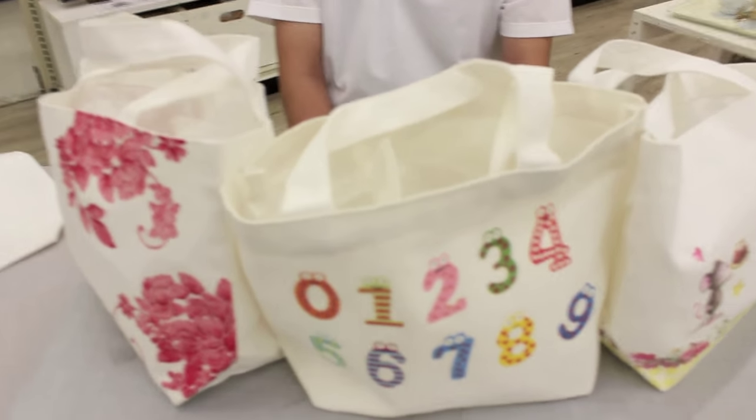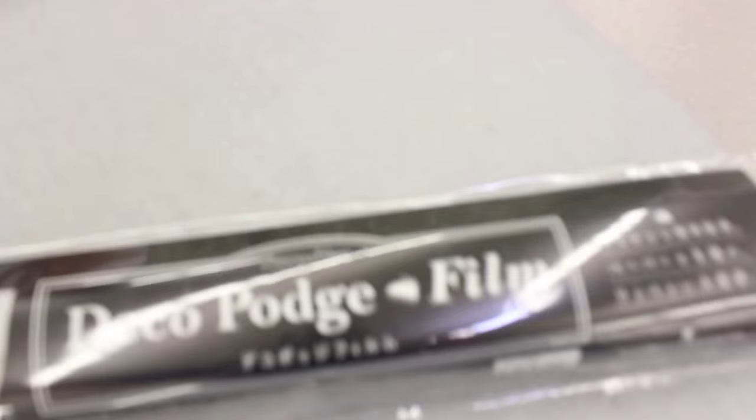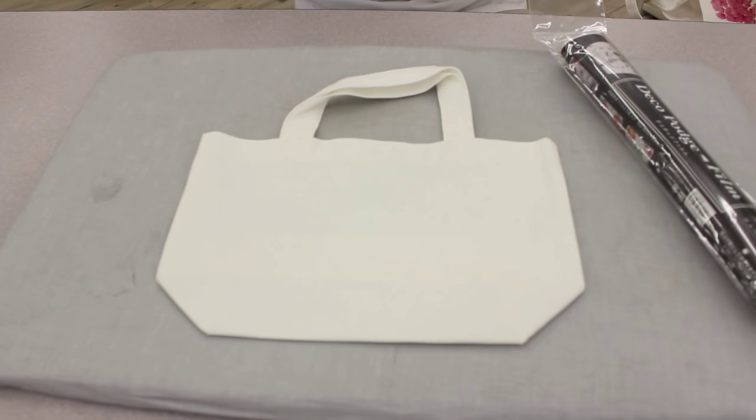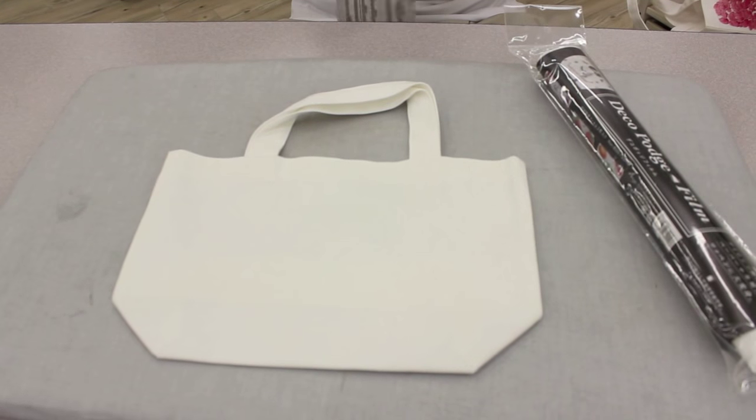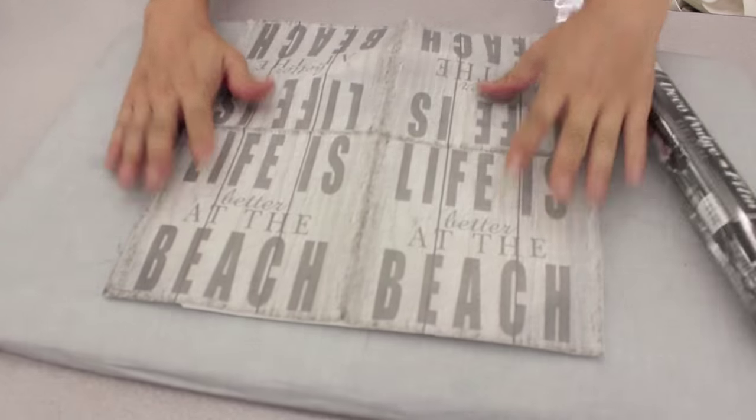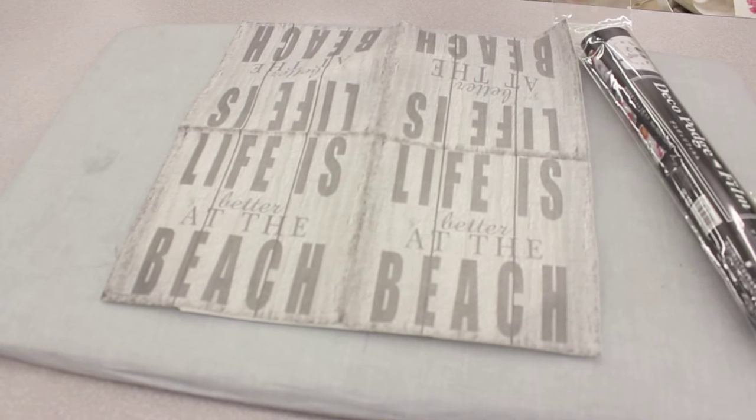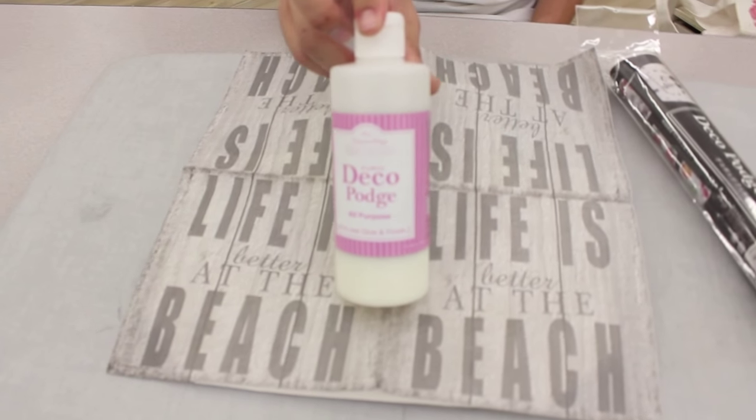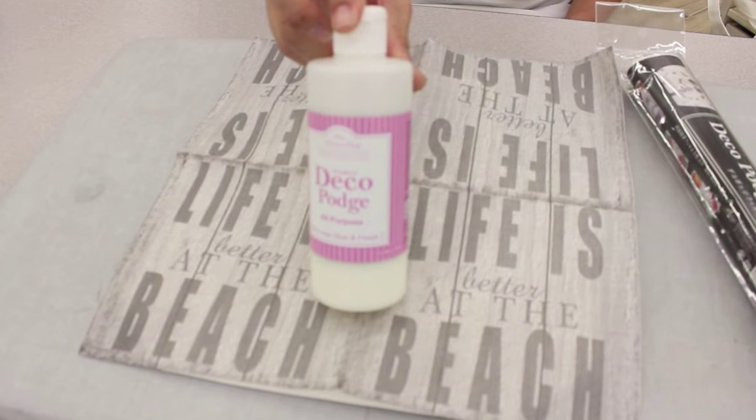So the supplies that you will need are an iron, dry iron, and this right here is decoupage film, also canvas bag and or any type of bag. We're using a canvas bag today and then a napkin, paper napkin, and also the all-purpose decoupage glue. We're using this glue today because you need this when you use the paper napkin.